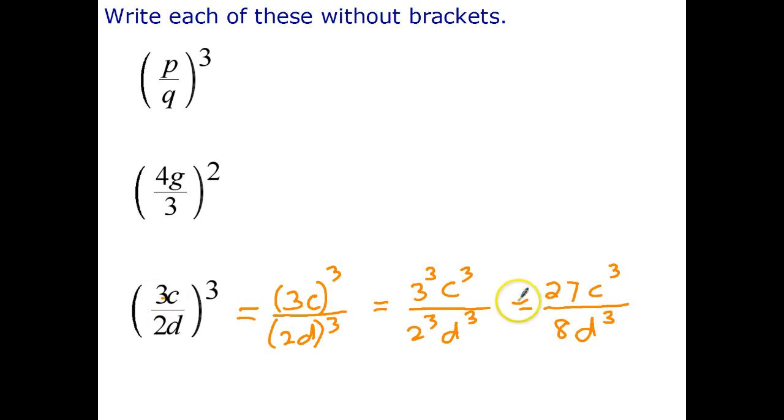Just quickly summarizing, the first thing I did is I used index law number 5 to get rid of the large brackets and I wrote it as expression over expression. I then had to apply a previous index law to get rid of these brackets, 3 to the power of 3, c to the power of 3 for example. And then finally because I've got some numbers, 3 to the power of 3 that's best written as 27. Have a go at the other two questions on the page and then restart the video.